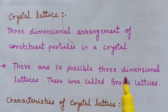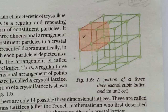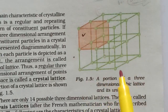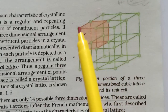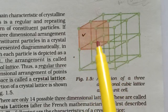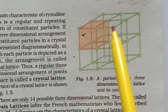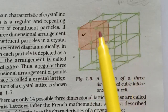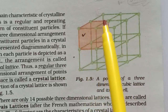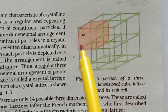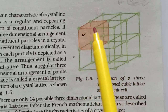There are 14 possible three-dimensional lattices and these are called Bravais lattices. Here in this figure, a portion of a three-dimensional cubic lattice is given. If we repeat this unit — represented by the orange color — in all directions, we get the entire lattice. This smallest and repeating unit in the entire crystal lattice is known as a unit cell.